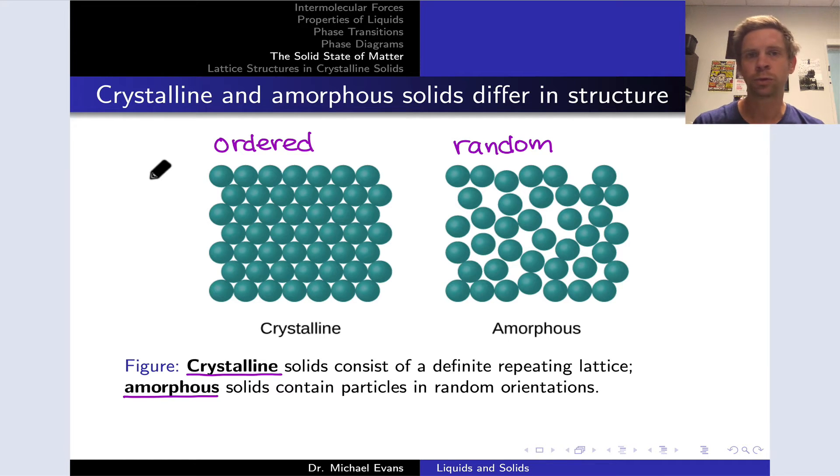They start nestling up close to one another, become stationary, and start becoming engaged in relatively strong intermolecular forces. When a liquid freezes to a solid it can do so in one of two ways, either an ordered way or a random way.